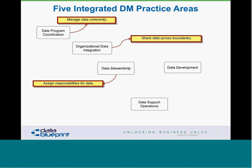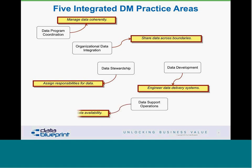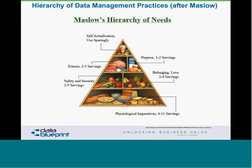The fourth data management practice area is engineering data delivery systems — building delivery systems. Our colleges and universities, including Virginia Commonwealth University where I teach, do not teach people anything other than the relational model, so people often can't make good decisions about things they don't understand. The fifth area is data support operations. It all comes down to understanding these like Maslow's hierarchy of needs: if your basic needs aren't met, you won't be writing great novels.